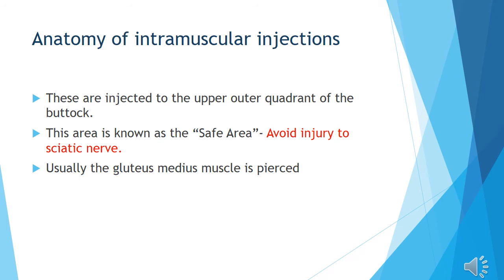To identify the upper outer quadrant, we use surface markings: the iliac crest, the anterior superior iliac spine, and we divide the gluteal region accordingly to safely administer injections away from the sciatic nerve.